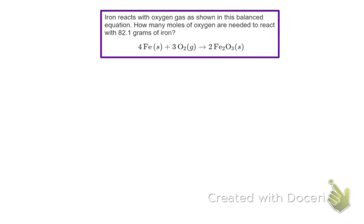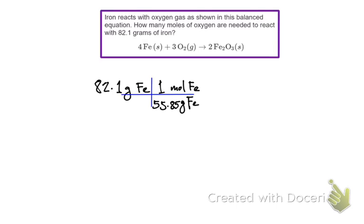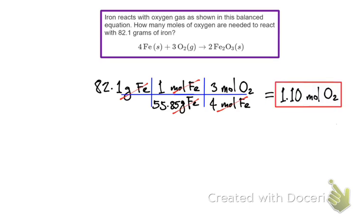Last example: iron reacts with oxygen gas as shown in this balanced equation. How many moles of oxygen are needed to react with 82.1 grams of iron? Our starting point is 82.1 grams of iron. Set up your dimensional analysis and convert mass in grams — the molar mass of iron is 55.85 grams per mole. Then use the mole ratio between iron and oxygen gas as shown. This gives us 1.10 moles of oxygen gas — 82.1 times 3 divided by 55.85 times 4 equals 1.10.